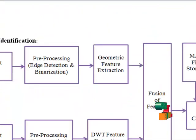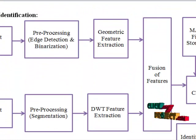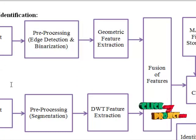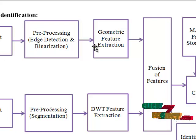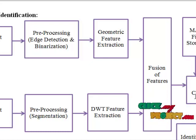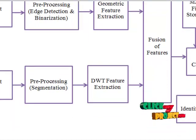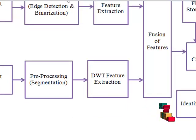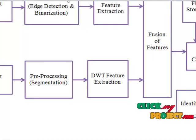For the identification, that is the verification part, we provide the system with a single test image where pre-processing will be done as in training, features will be extracted, and fusion will be applied. Finally, the map file storage and the extracted features will be fed to a KNN classifier to identify the particular identity of a person. This project holds a hybrid mechanism to verify the authentication of a person.